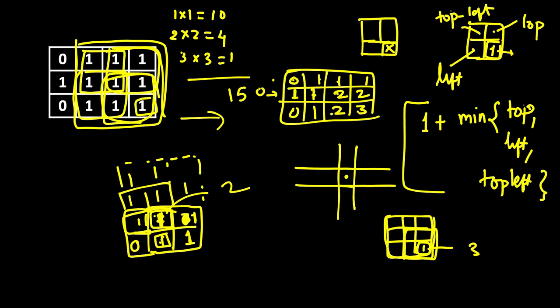Adding all the DP values: 3, 2, 5, 1, 6, 6, 4, 10, 12, 12+3 = 15. This confirms the total count.